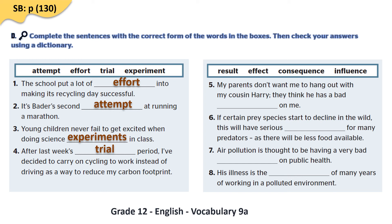Sentence five: my parents don't want me to hang out with my cousin Harry — they think he has a bad influence on me. People talk about a bad or good influence when referring to the effect someone has on the way others think or behave. Sentence six: if certain prey species start to decline in the wild, this will have serious consequences for many predators as there will be less food available — a consequence is the result or effect of something that has happened.